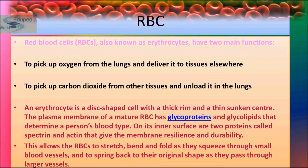Now we will study RBC in detail. An adult male has about 5.1 to 5.8 million RBCs per cubic millimeter of blood, while an adult female has about 4.3 to 5.2 million per cubic millimeter. Abnormal increase in the number of RBCs is called polycythemia, whereas a decrease is known as erythrocytopenia.